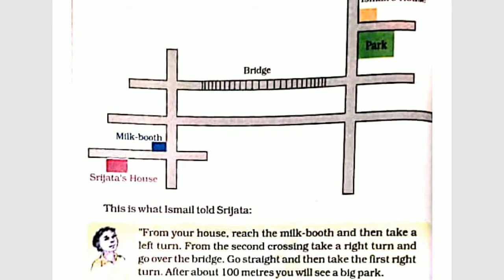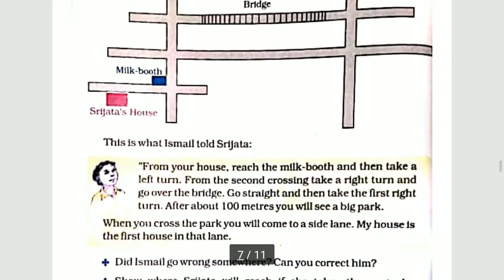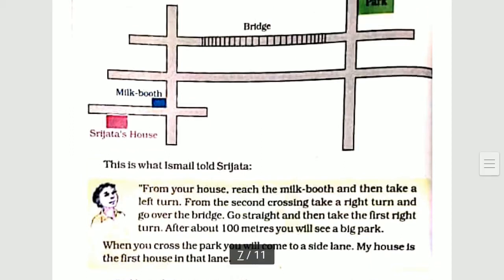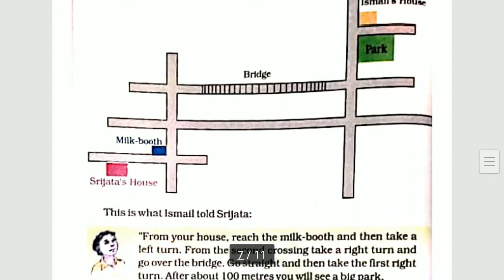From the second crossing, take a right turn. Go over the bridge. Go straight and then take the first right turn. After about 100 meters you will see a big park. When you cross the park you will come to a side lane. My house is the first house in that lane.